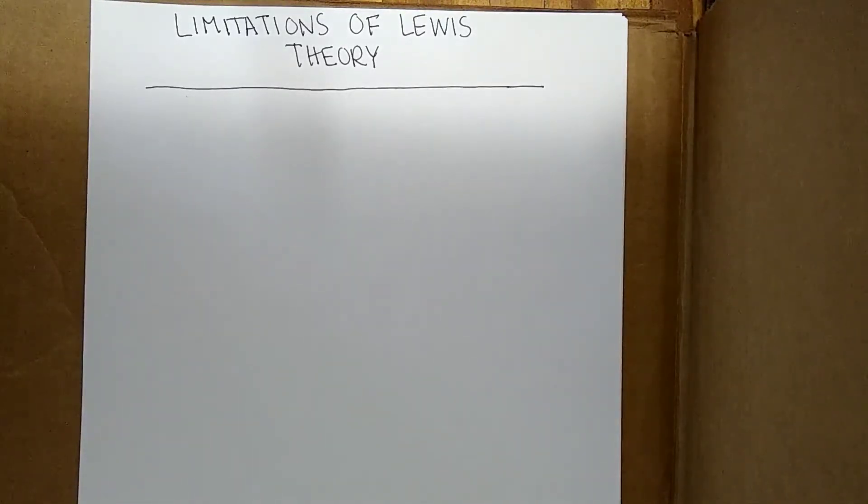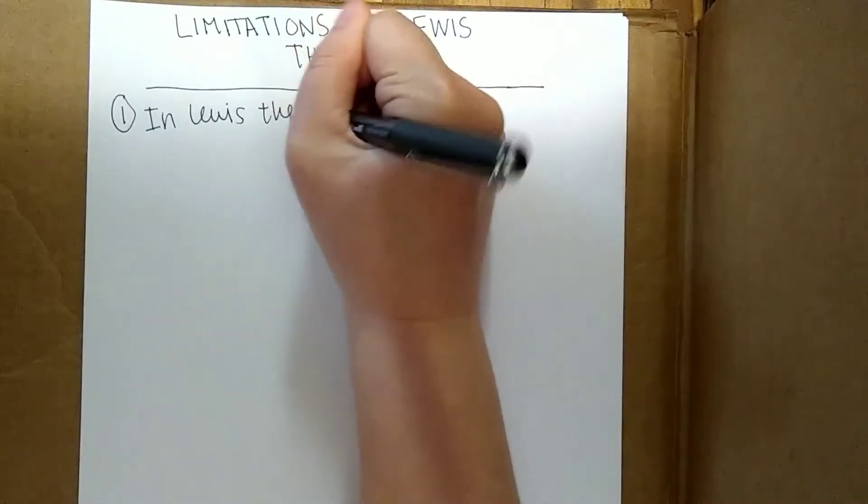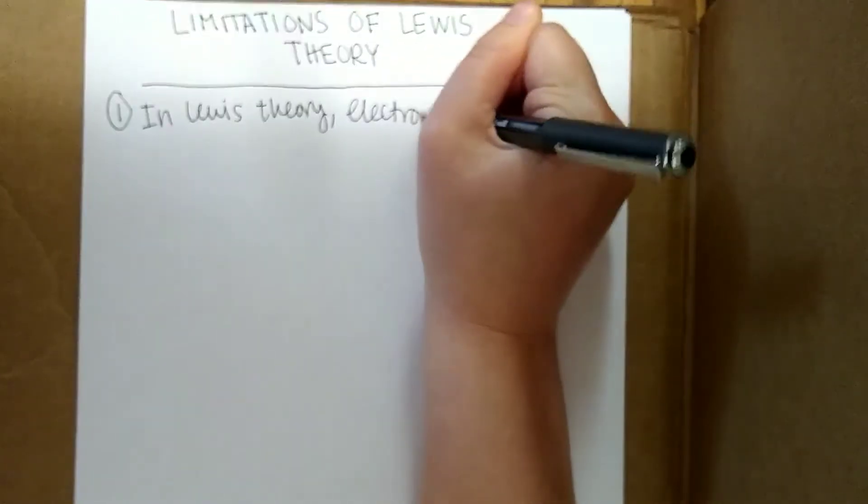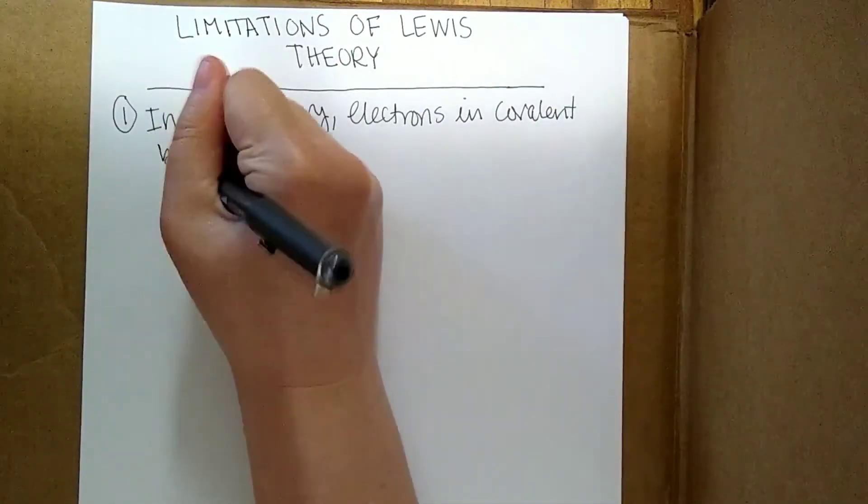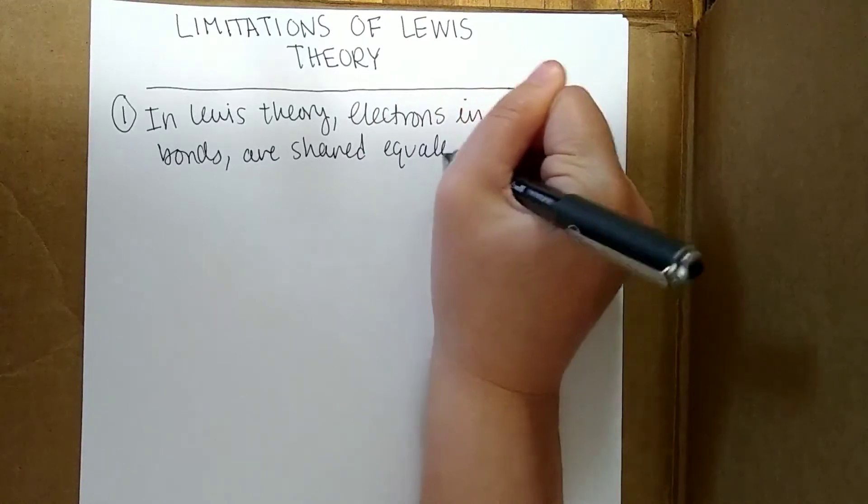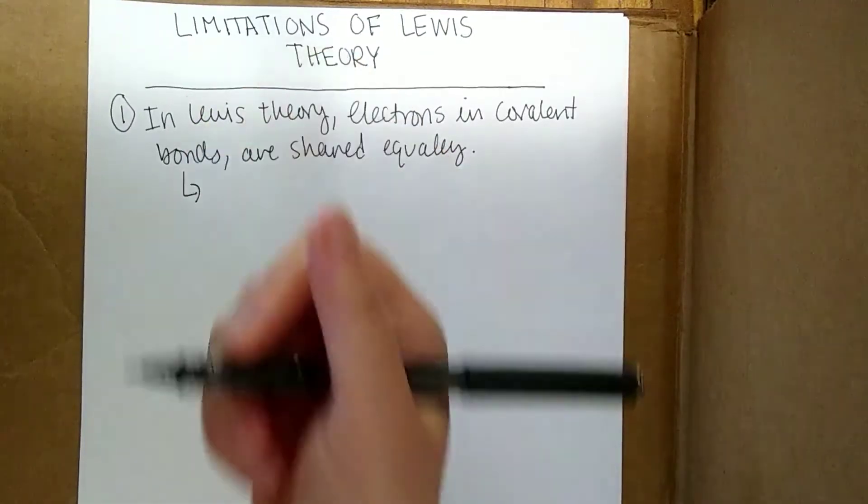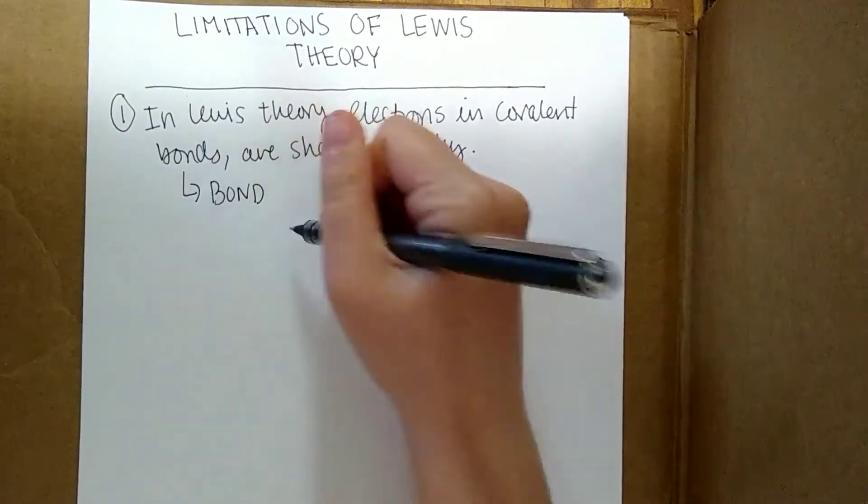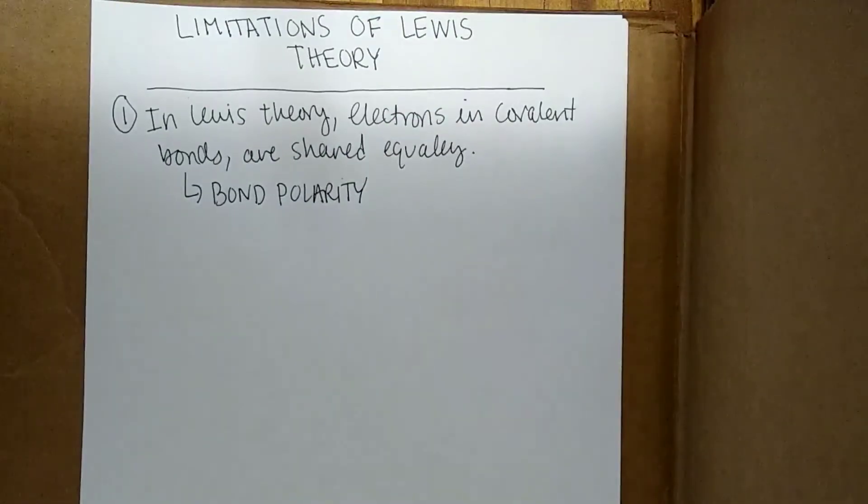So the first thing you have to realize is that in Lewis theory, all the electrons in the covalent bonds are shared equally. And we know this isn't really the case, so we need a way to account for that. So we're going to discuss later the idea of bond polarity and how we can think about that within the framework of Lewis theory.